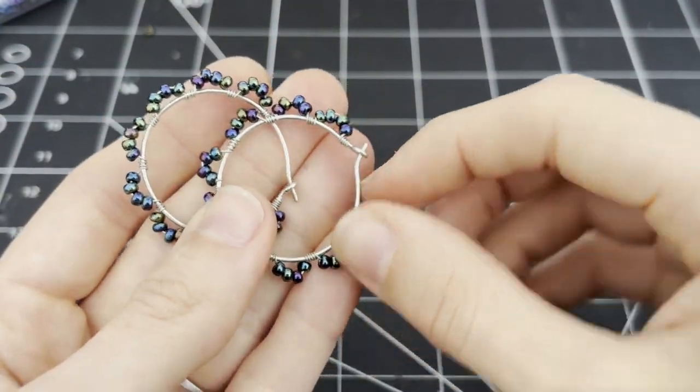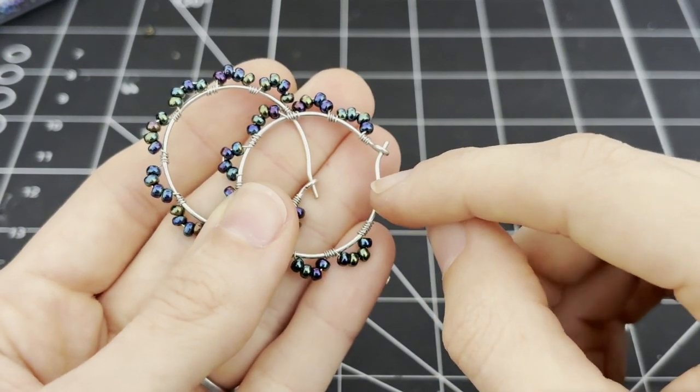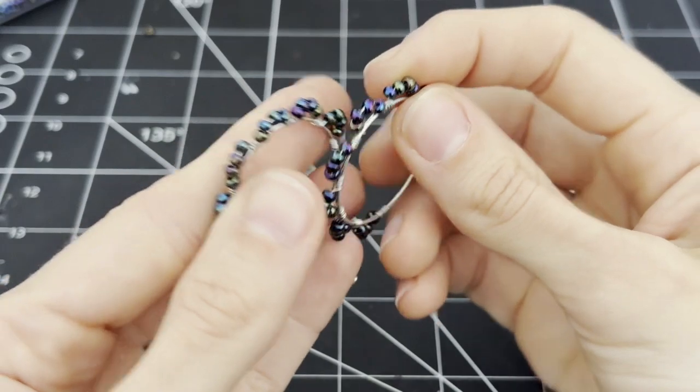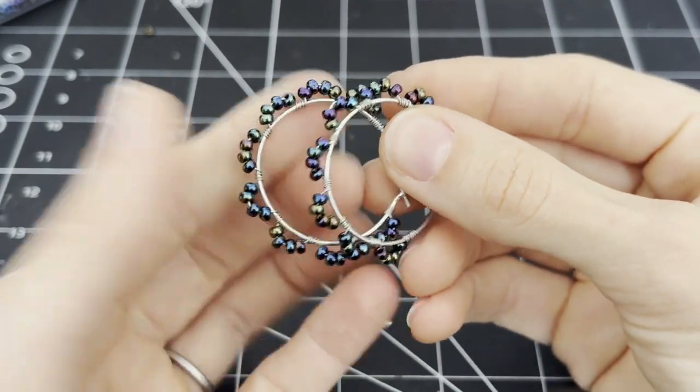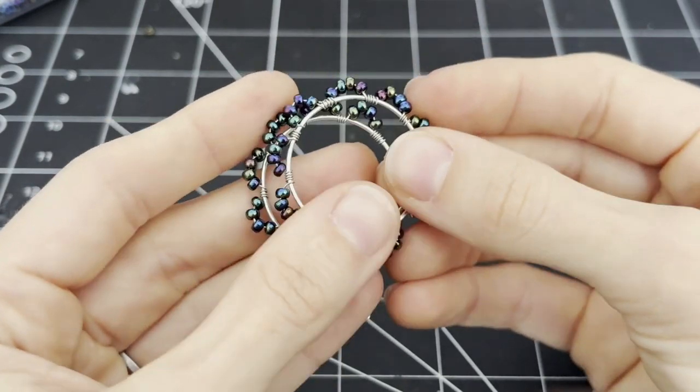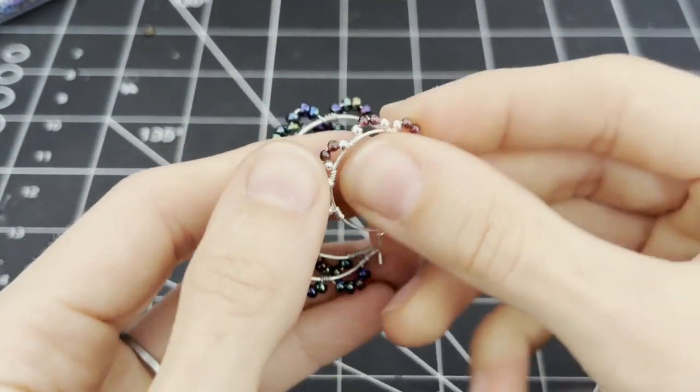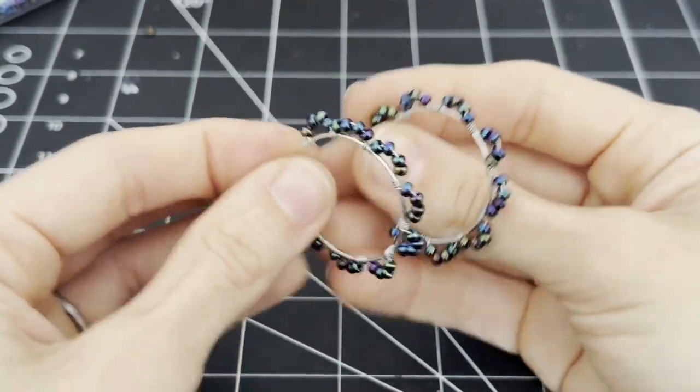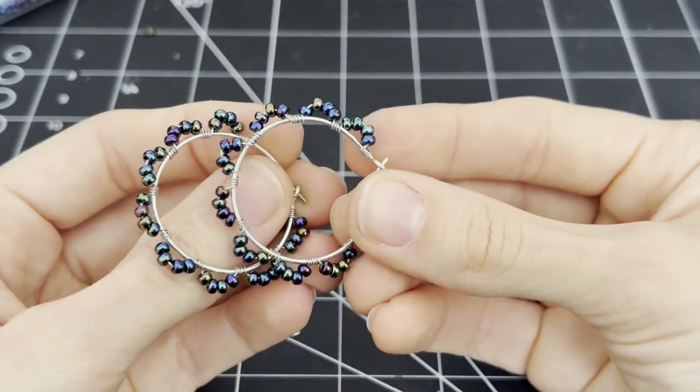So for these ones I used, this is an 18 gauge wire and the weaving wire is 26 gauge. And these are just some small seed beads, I don't know the size. But that's what I had around. You can use tiny gemstone beads, like I did here, or just metal beads. But I think it's quite a cool design and really easy to make.